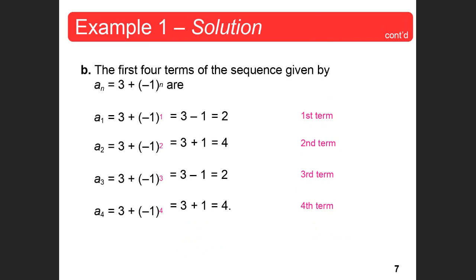The first four terms of the sequence given by a sub n equals 3 plus negative 1 to the n. Negative 1 to the first power is negative 1, so 3 plus negative 1 is 2. If you put 2 in, negative 1 to the second power is positive 1, so 3 plus 1 is 4. This just keeps alternating between negative 1 and positive 1, so the sequence is 2, 4, 2, 4, on and on.